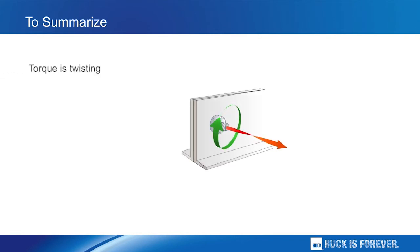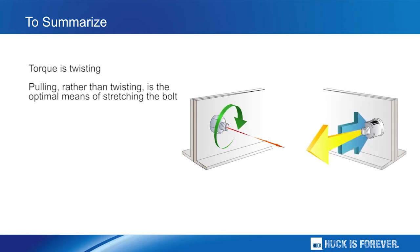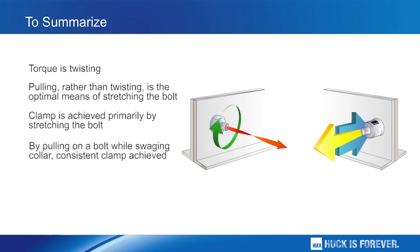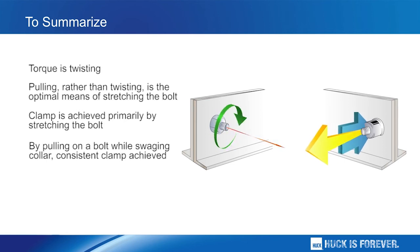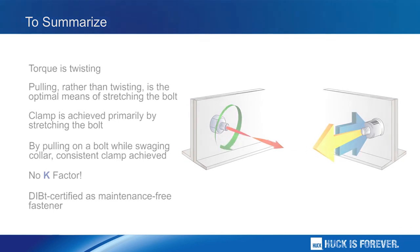Let's summarize. Torque involves twisting the bolt. By contrast, tension-induced tension — stretching the bolt — is the optimal means of achieving clamp. Clamp is achieved primarily by stretching the bolt. The two-part process of pulling on the bolt while swaging the collar delivers a high level of consistent clamp and resulting vibration resistance. The process eliminates the variable K-factor. Finally, the overall level of vibration resistance of the advanced bobtail huck bolt is confirmed by its certification as a maintenance-free fastener.